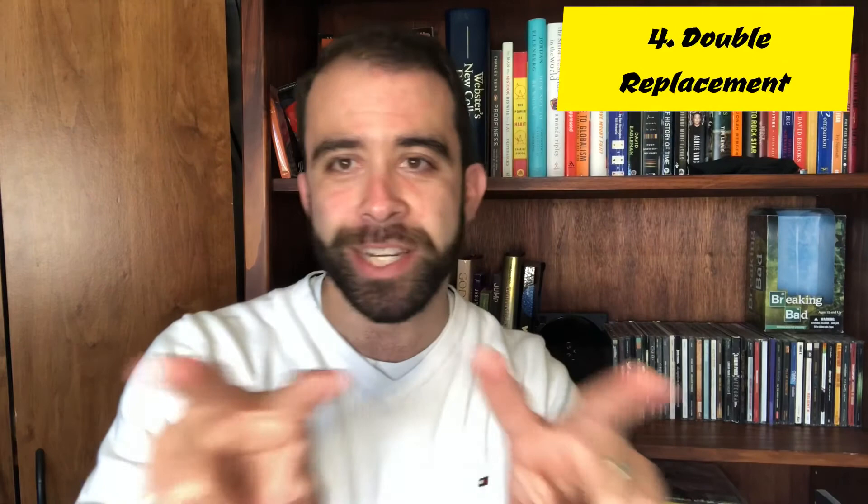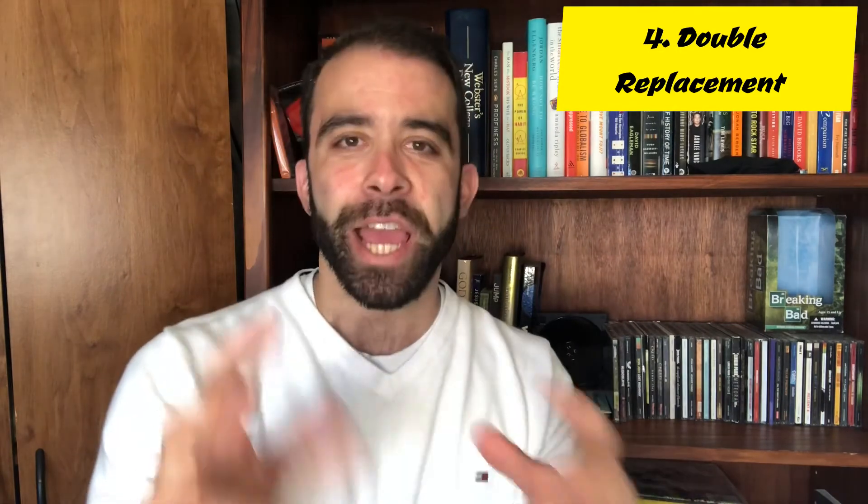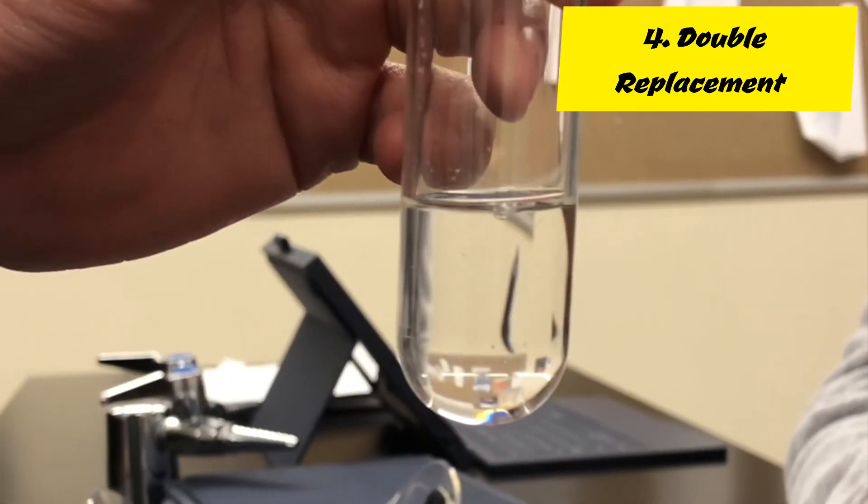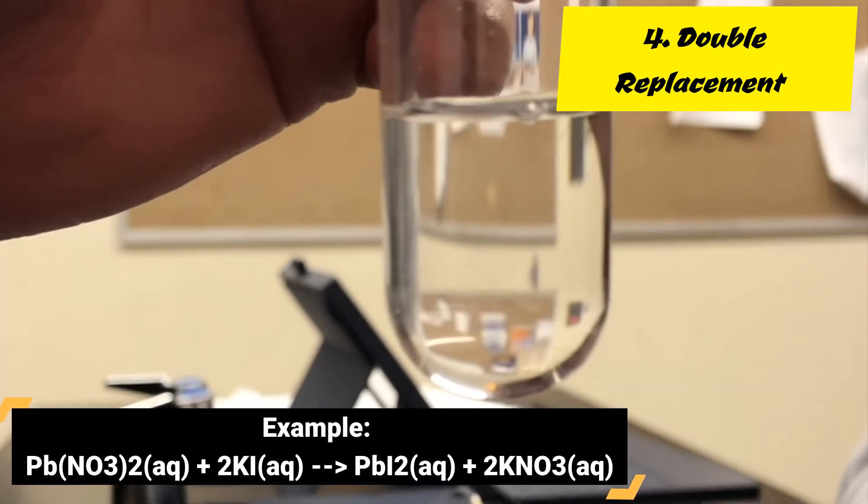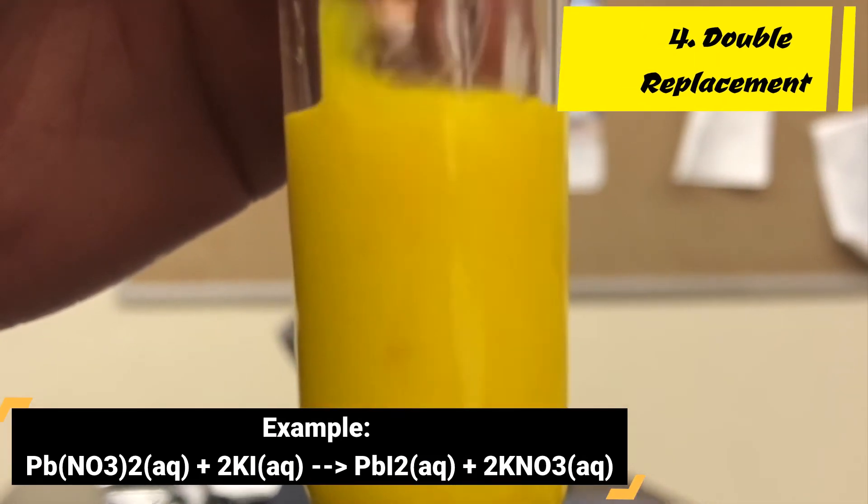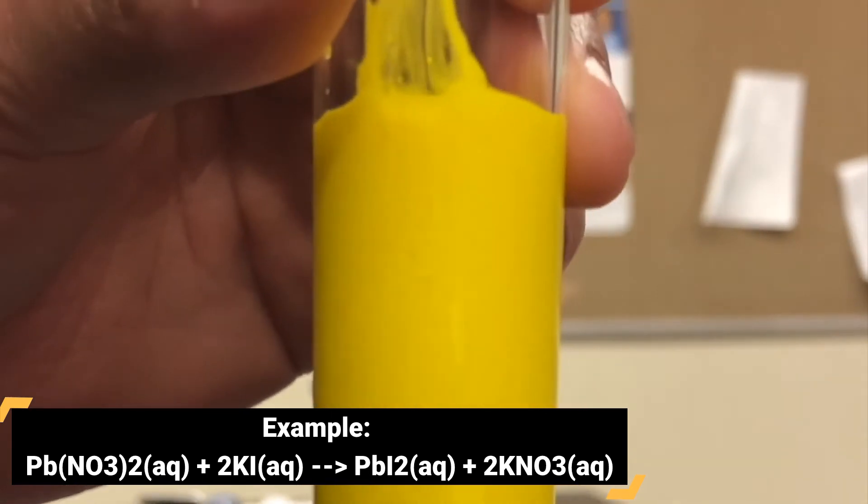A double replacement reaction is very similar. It is where you have two compounds, each with two parts, and if you're doing a duo dance swapping dance partners, it's the same idea here. In a double replacement reaction, one part of each compound swaps places, just like in this reaction here where we have lead nitrate reacting with potassium iodide. It is a double replacement reaction because the lead replaces the potassium, producing lead iodide and potassium nitrate.